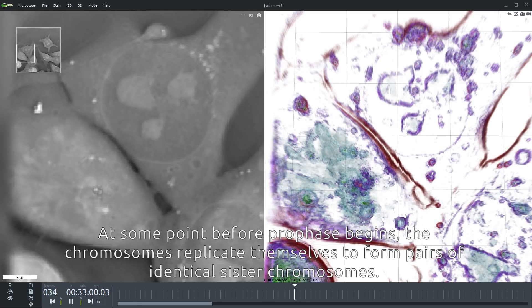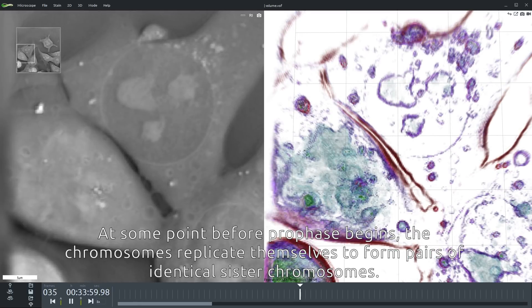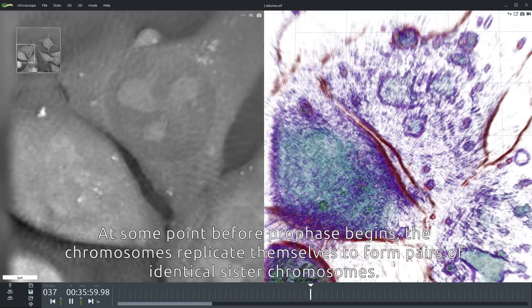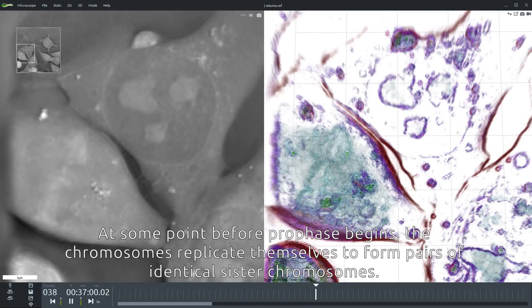At some point before prophase begins, the chromosomes replicate themselves to form pairs of identical sister chromosomes.